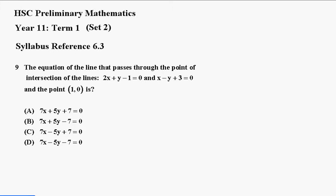It's called the k method and what we do is how we set it up. We write this as, they must be in the general form, which they are, so it's 2x plus y minus 1 plus k times (x minus y plus 3) equals 0.